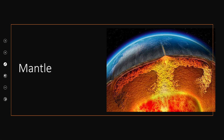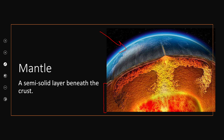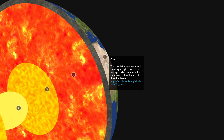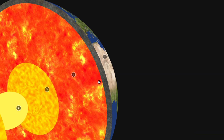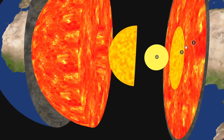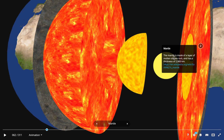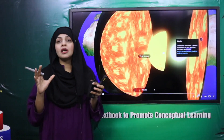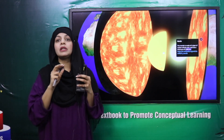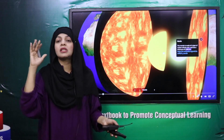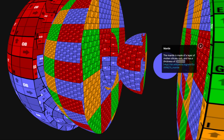Then we will dive inside - beyond the crust we find the mantle. The mantle is a semi-solid layer beneath the crust. We will go towards the 3D model to see where the mantle is. The mantle is made up of a layer of molten silicate rocks and has a thickness of 2,900 kilometers, which makes it 84 percent of the earth. So while the crust is about 1 percent, the mantle is 84 percent - it is the thickest part of the earth. It is made up of molten silicate rocks, oxygen, and aluminium.